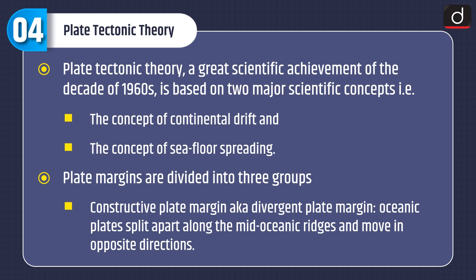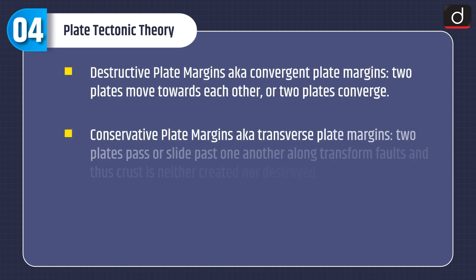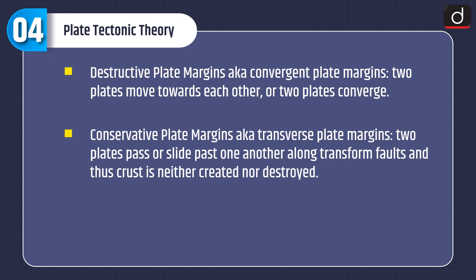Plate margins are divided into three groups. First, constructive plate margins, also called divergent plate margins, where oceanic plates split apart along mid-oceanic ridges and move in opposite directions. Second, destructive plate margins, also called convergent plate margins, where two plates move towards each other or converge. Third, conservative plate margins, also called transform plate margins, where two plates pass or slide past one another along transform faults, and thus crust is neither created nor destroyed.